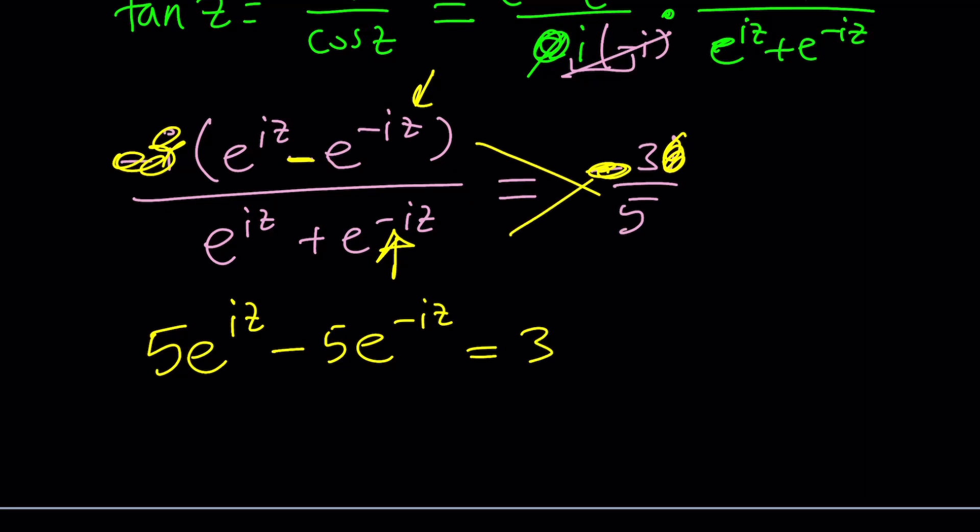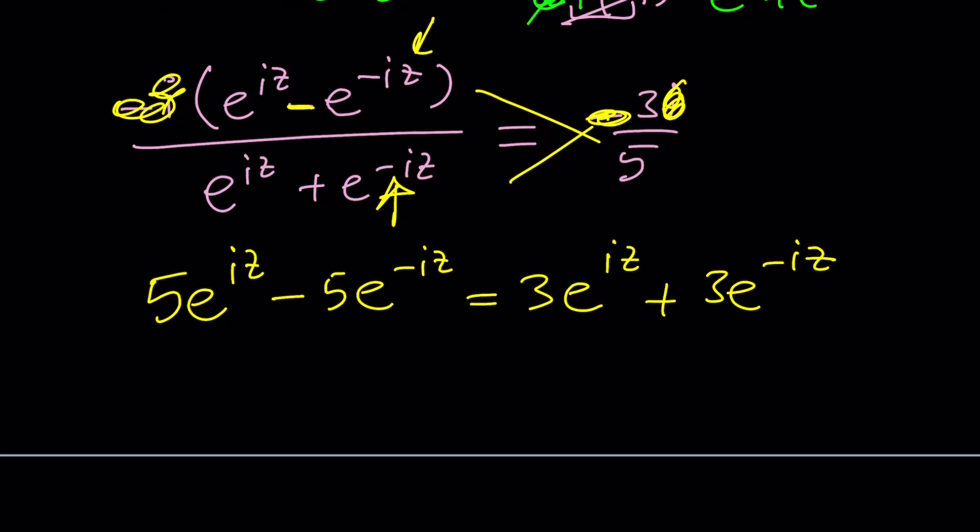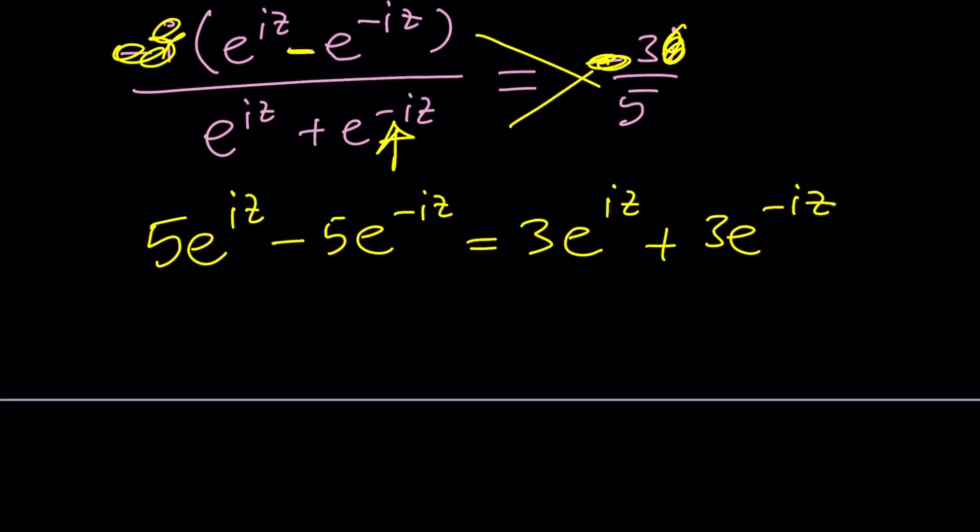It's going to put the positive iz's on one side and the negative iz's on the other. So, subtract this and add that. 2e to the iz equals 8e to the negative iz.